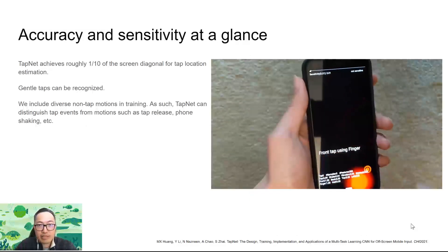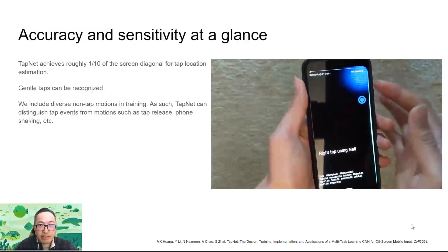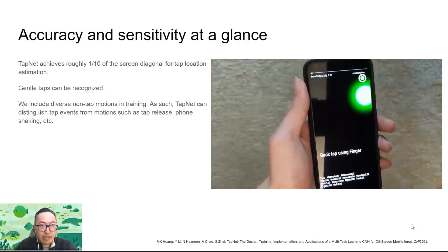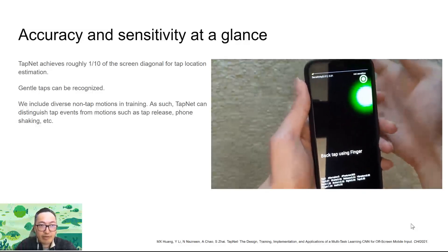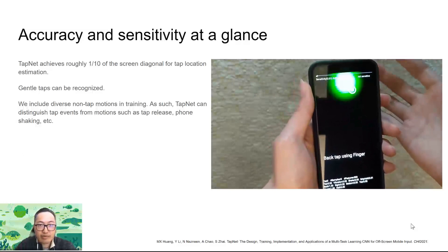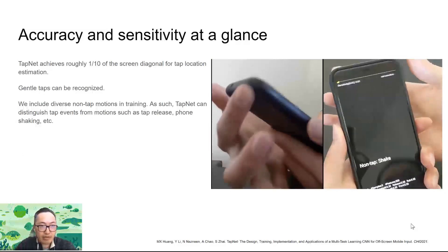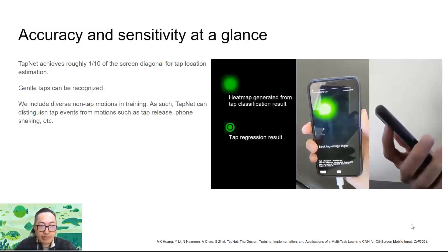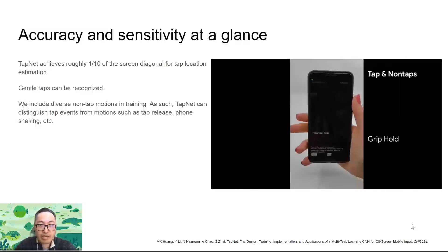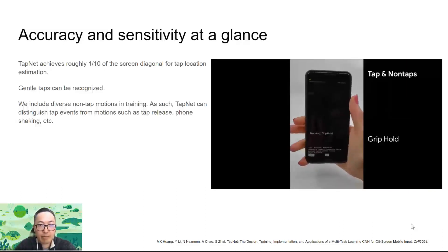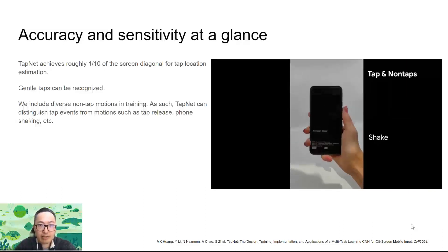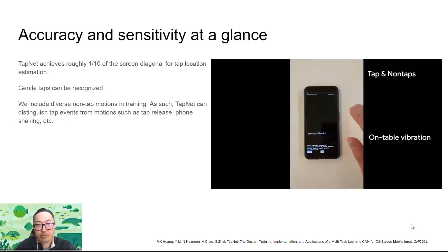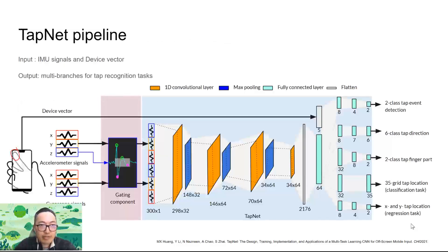Here is a glance at the accuracy and sensitivity. TapNet achieves roughly one-tenth of the screen diagonal for tap location estimation. Gentle taps can be recognized. We also include diverse non-tap motion in training, so TapNet can distinguish tap events from motions such as tap release, phone shaking, etc.